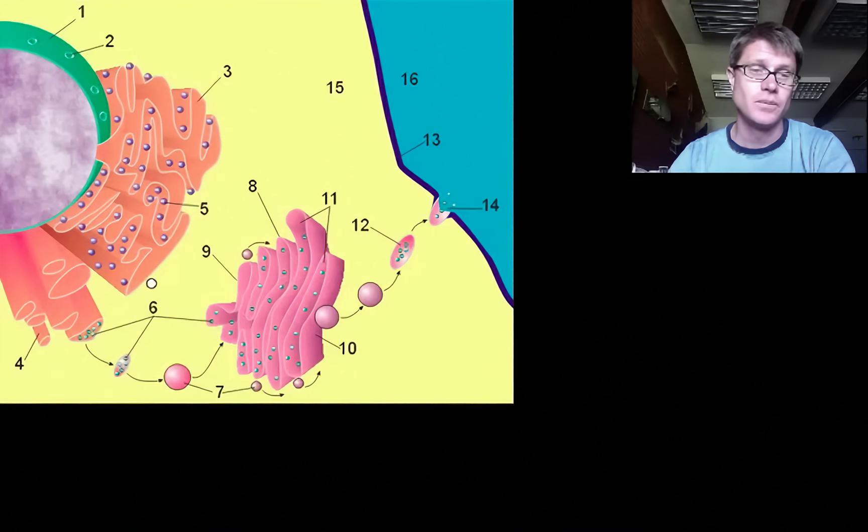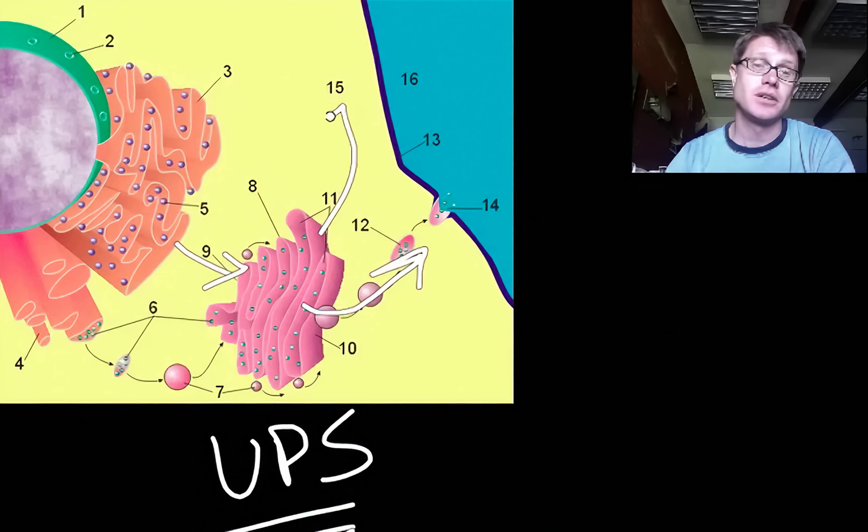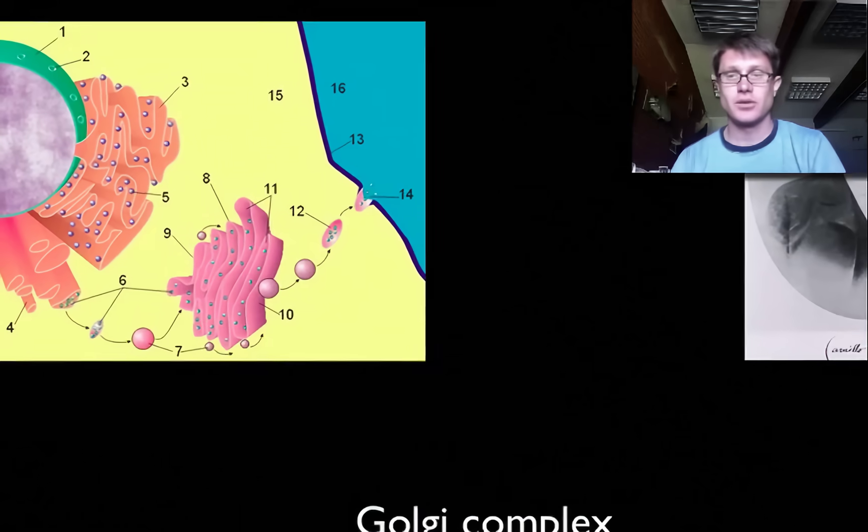What's the Golgi apparatus do? Well in general it takes information that's produced in the endoplasmic reticulum and then it ships those different parts of the cell. I like to think of it as like the UPS of your little factory. Material is made in the endoplasmic reticulum, it's moved to the cellular UPS and then it's going to move on its way either to different parts of the cell or even outside the cell. That's the Golgi apparatus.